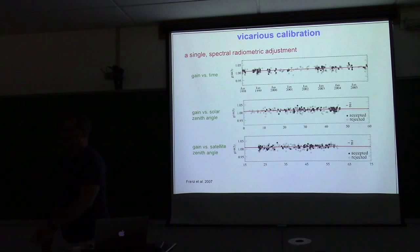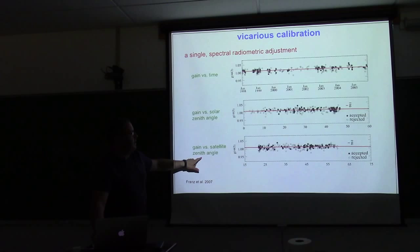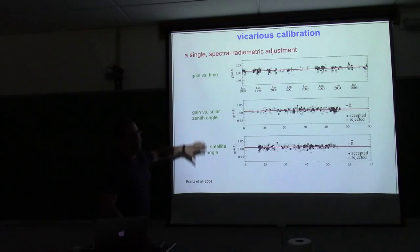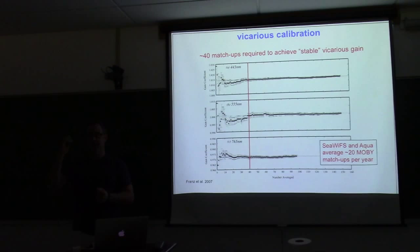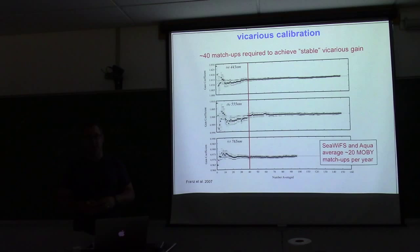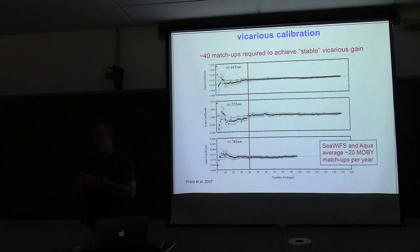The accepted versus rejected data points mostly reflect a homogeneity test, plus looking at flags and masks. Gain versus solar zenith angle and gain versus satellite zenith angle are sanity checks to convince ourselves there are no biases based on time of day or viewing geometry. This is all done with field data — you could use another satellite or models, but we need field data. As Ken discussed, Moby is a substantial effort with a huge team. However vicarious calibration proceeds in the future, you need the absolute best quality field data, because any biases or imprecision will get propagated directly into the satellite calibration.